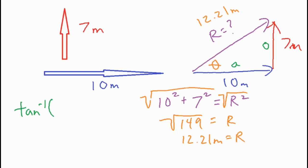So we have the opposite end, which is 7 meters, divided by our adjacent end, which is 10. And then our theta, our unknown angle, comes out to about 34.99 degrees.